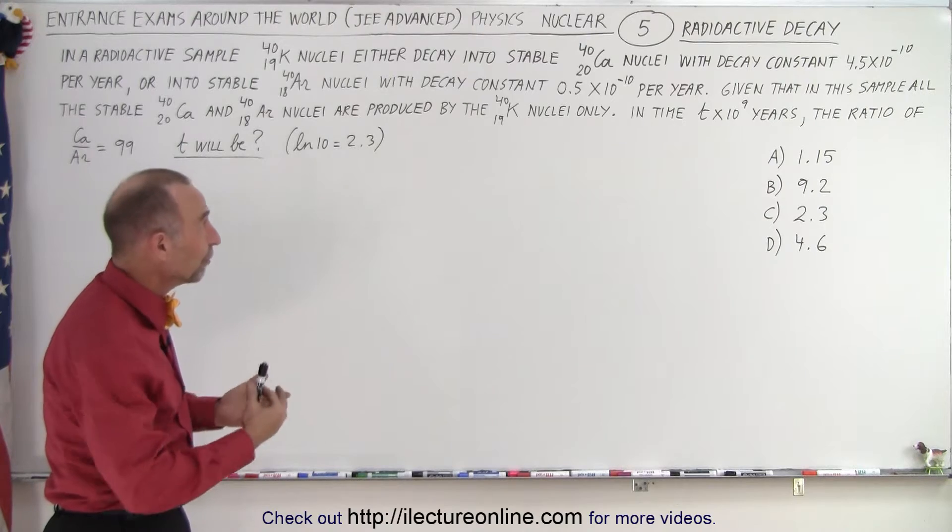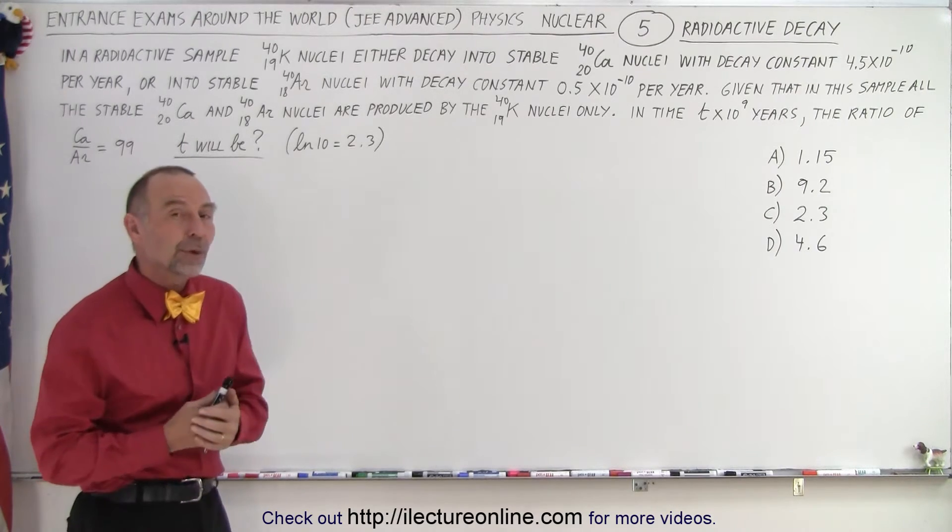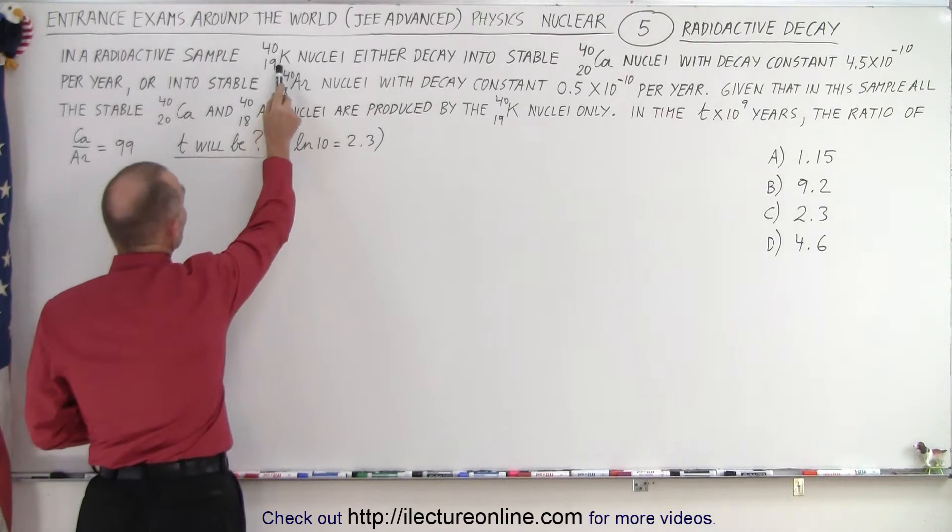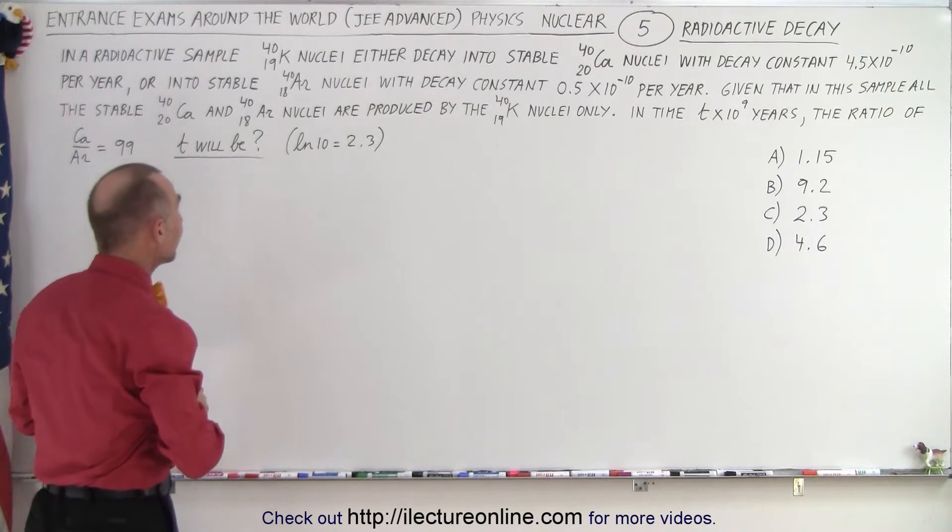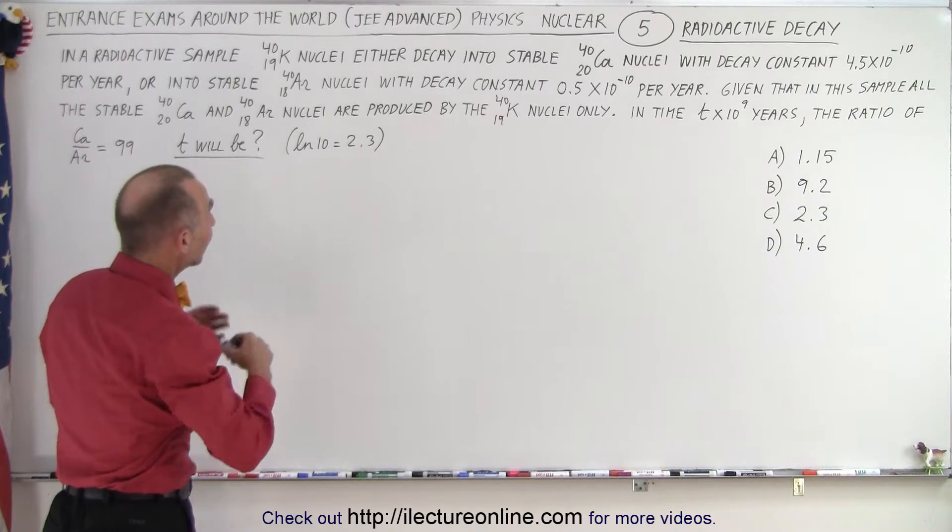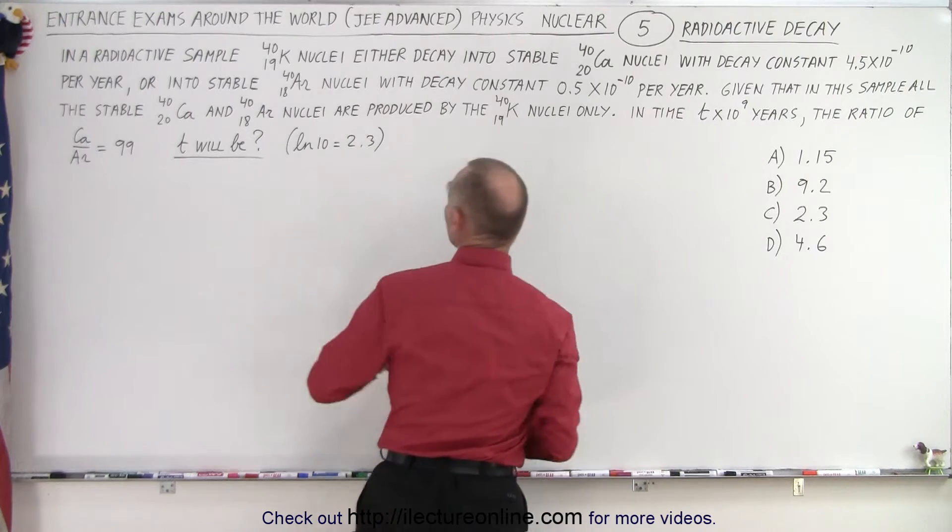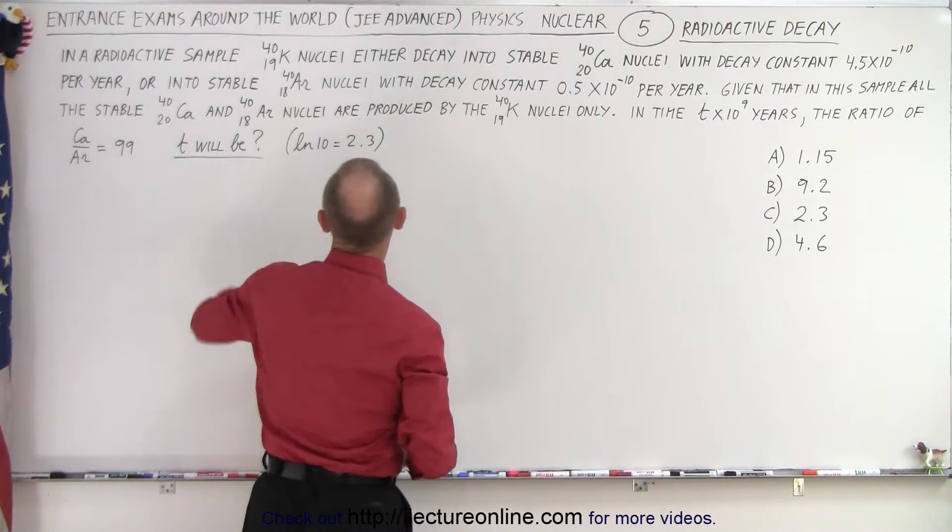This has to do with nuclear physics and particularly with radioactive decay. So we have a sample, it's radioactive, and it's made up of radioactive potassium-40 and it decays into two stable nuclei.